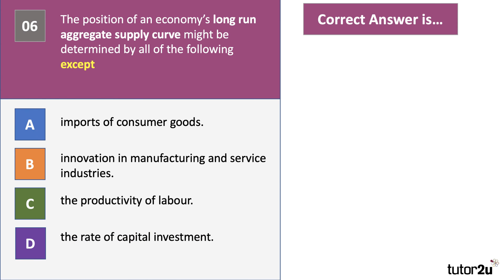Here is the last question. The position of an economy's long run aggregate supply curve might be determined by all of the following except — we're looking for the odd one out, the factor that has no significant bearing on the position of the long run aggregate supply curve. Can you find which one it is — A, B, C, or D?